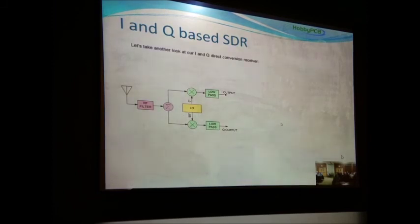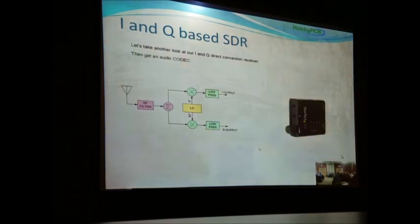So if we take our IQ Tayloe detector direct conversion receiver, and we get an audio codec, which is a coder and decoder, generally digital, you might find it in a laptop to do the sound. You might find it as a USB device that plugs into a laptop. These are generally two-channel high-performance A to D and D to A converters. The one that's here is 96 kilo samples per second and 24 bits of resolution. We can take the output of our converter and plug it into the right and left inputs of the A to D converter. Then we can take the resulting digital string, bring it into a computer, and use software to recover audio, do filtering, all of the standard SDR functions.